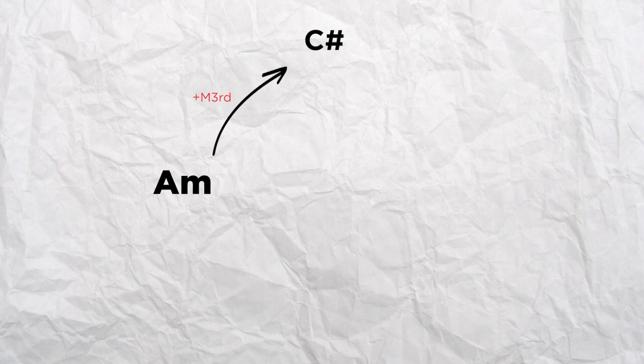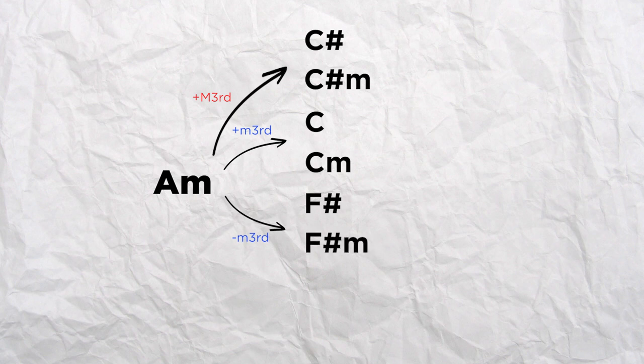Now let's see how chromatic mediants sound from a minor tonality. Let's start from A minor. That can lead us to a C sharp major, a C sharp minor, a C major, a C minor, a F sharp major, a F sharp minor, a F major or a F minor.